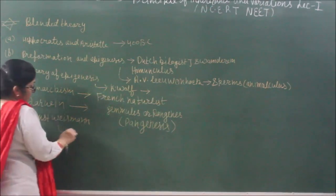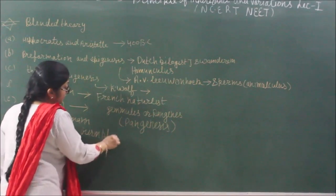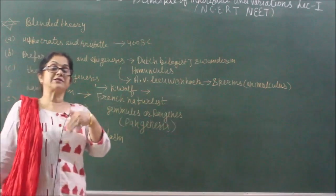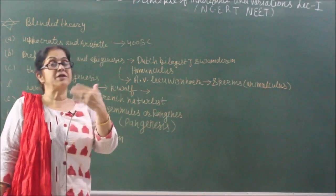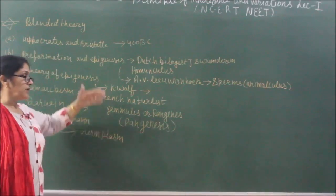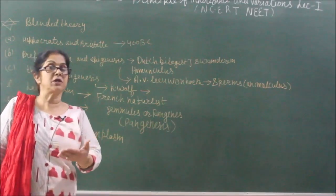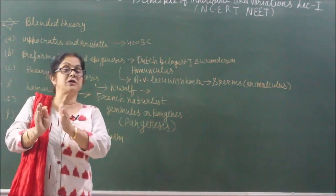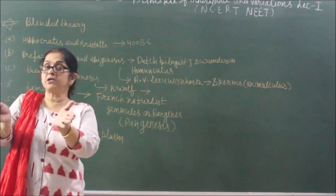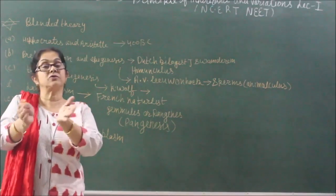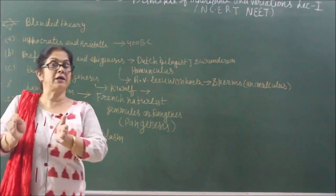After Darwin, scientist August Weismann gave the theory of germplasm — that characters are transferred only when present in reproductive cells. Variations from reproductive cells pass from one generation to another; if present only in somatic cells, they will never move. Different scientists worked differently and concluded various things about how characters pass from one generation to another, forming a small physical basis of heredity. Now we come to Mendel — who was he, why is he called the father of genetics, and the entire upcoming chapter is based on the work of Mendel.